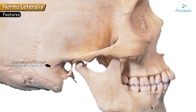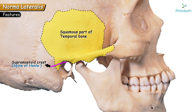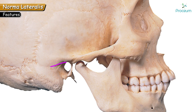The next feature is the supramastoid crest. To understand this crest, we trace the posterior root of the zygomatic arch. This crest is present over the squamous part of the temporal bone and is continuous with the posterior root of the zygomatic arch. The supramastoid crest is important because it forms a boundary of the suprameatal triangle, which is also known as MacEwen's triangle — a small triangular depression present above the external acoustic meatus.